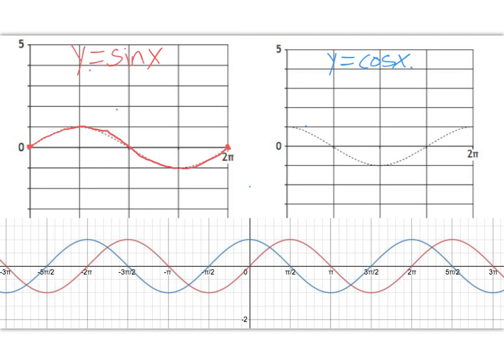For cosine, the graph is always going to start at the top, go down to the middle, go down to the bottom, something called the trough, back up to the middle, and back up to that peak.